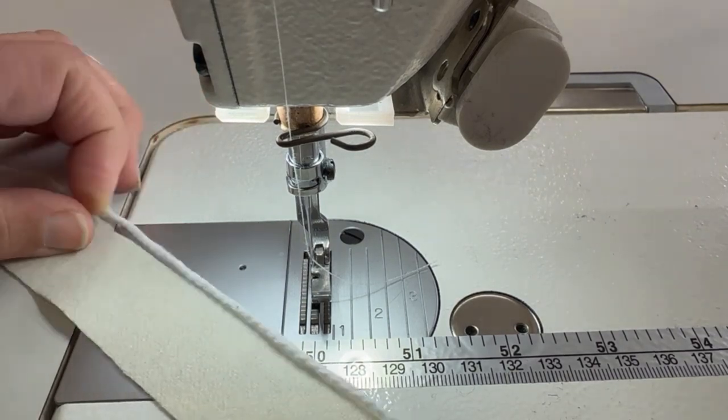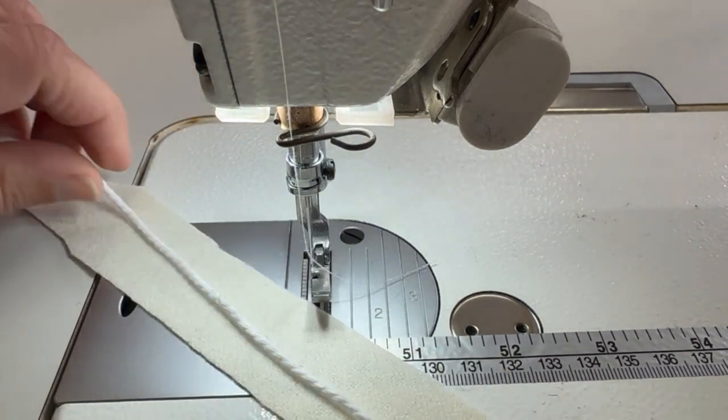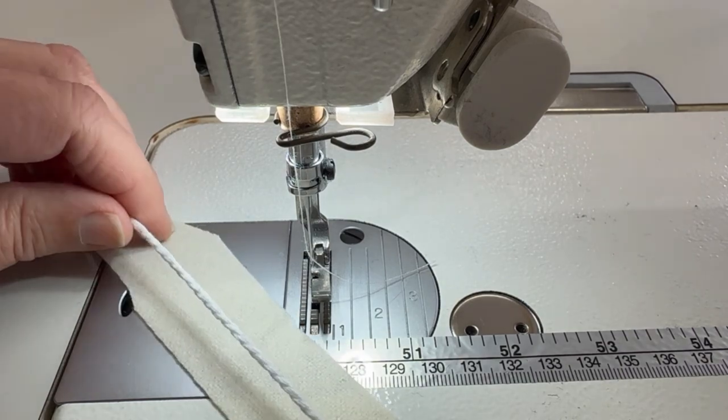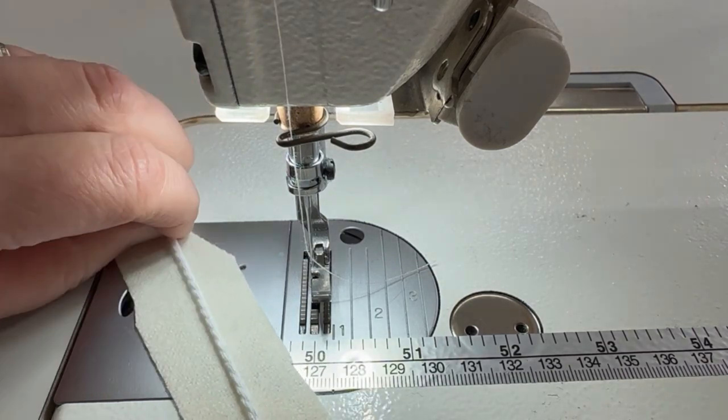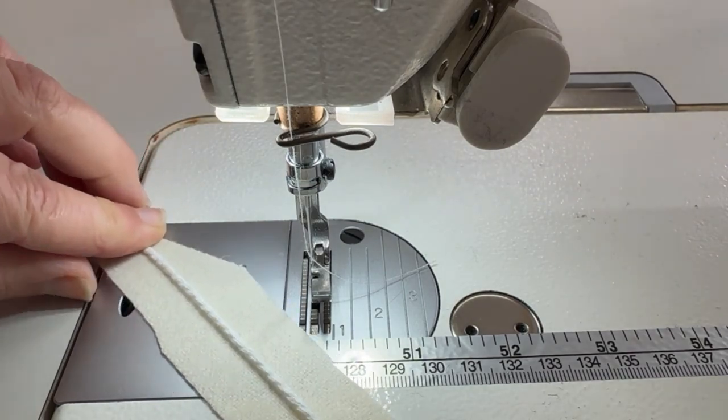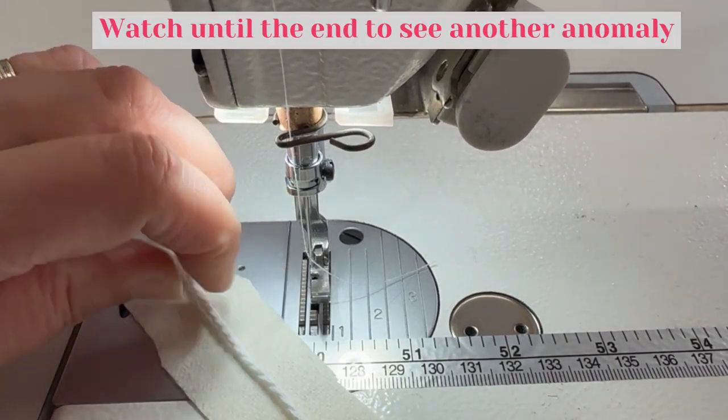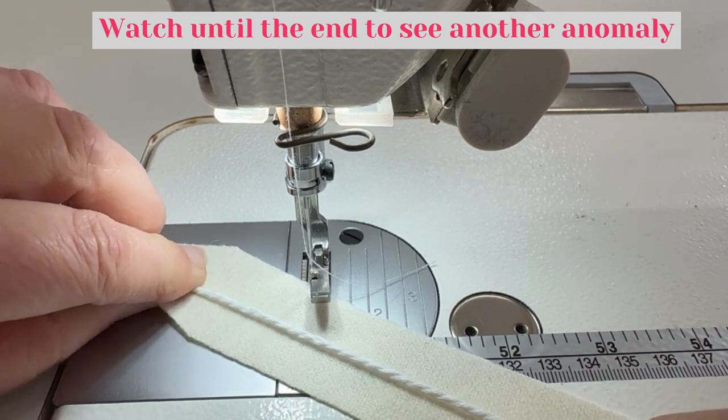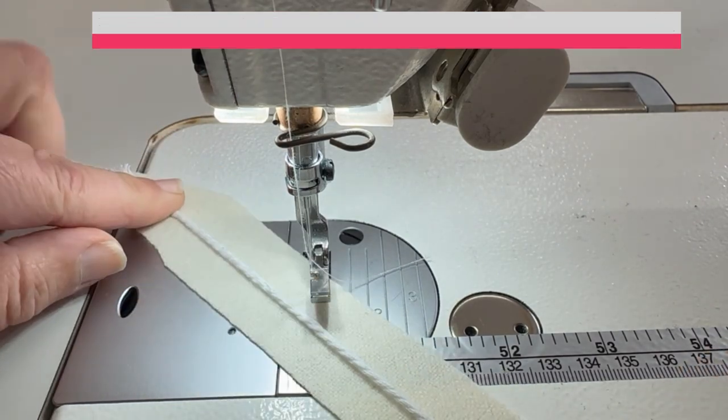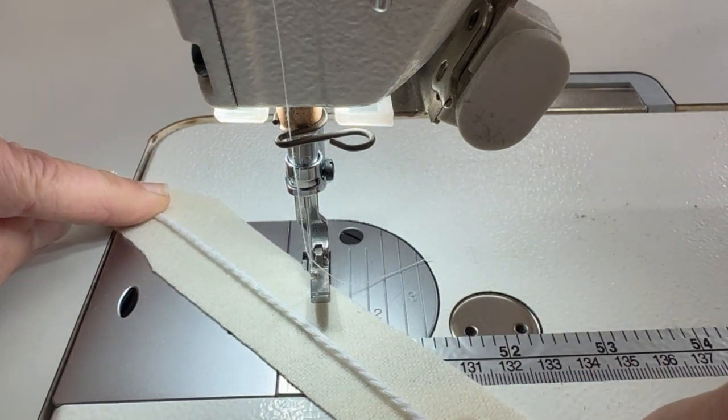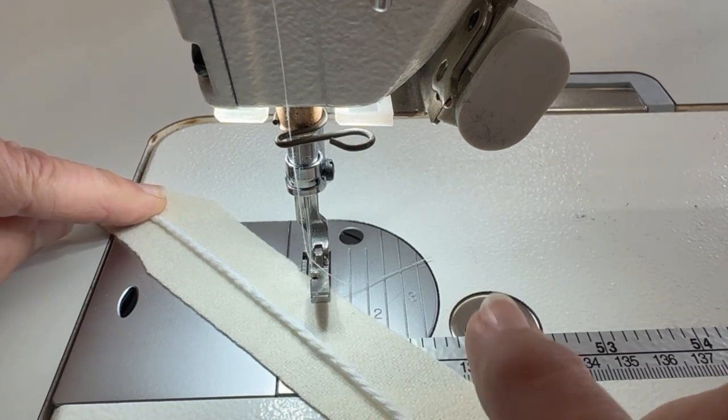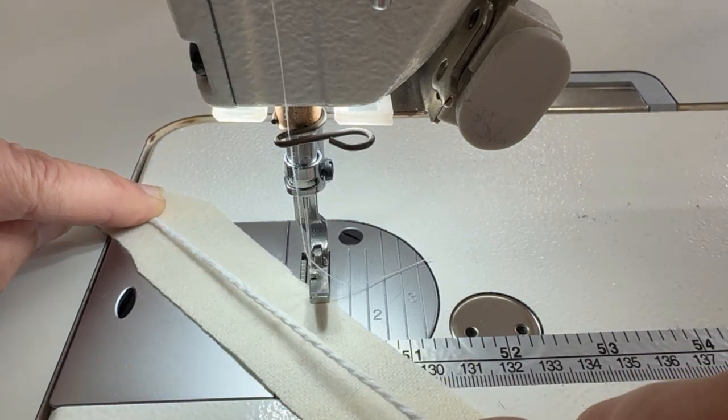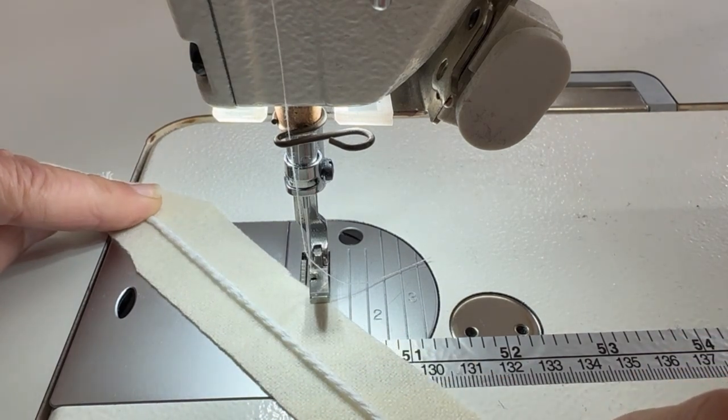I will talk again at another point about how you cut bias strips and things. There's always an anomaly. You can't always say this is the only way you do something when you come to sewing. It's never as straightforward as that. Usually when you make piping, you would cut your fabric piece on the bias. When you use wool, you cut it on the straight.